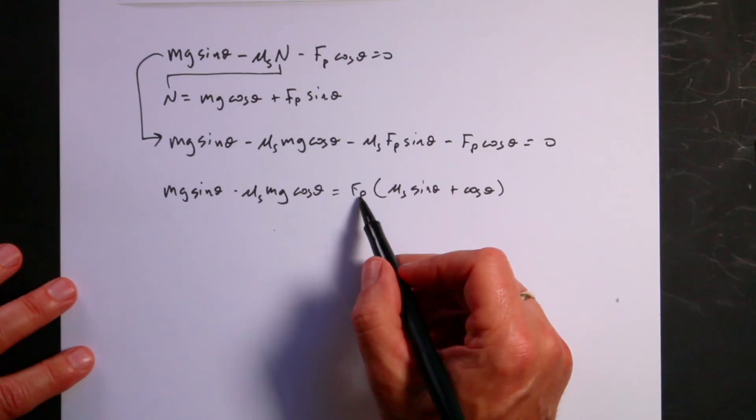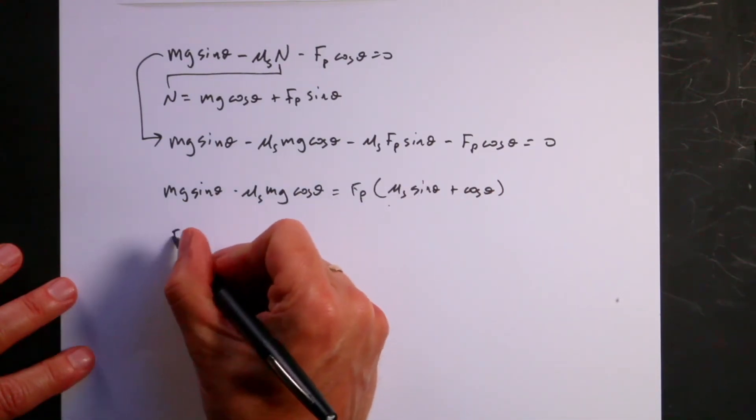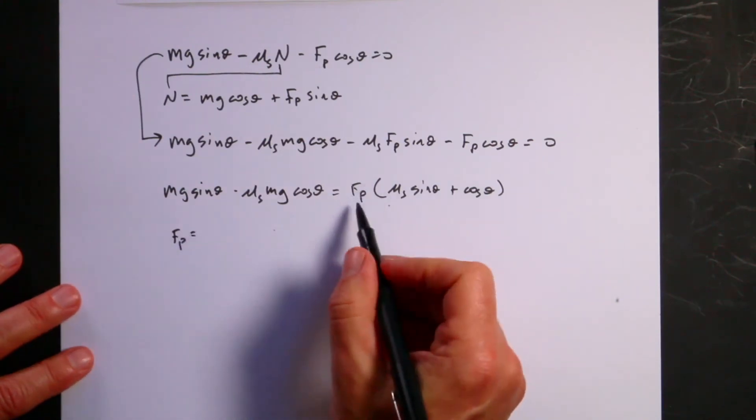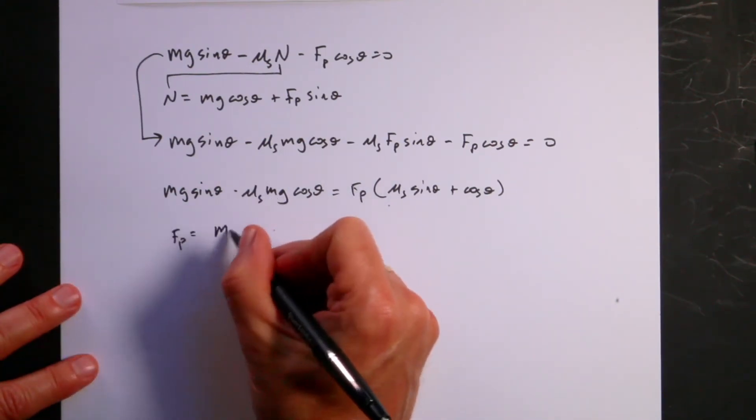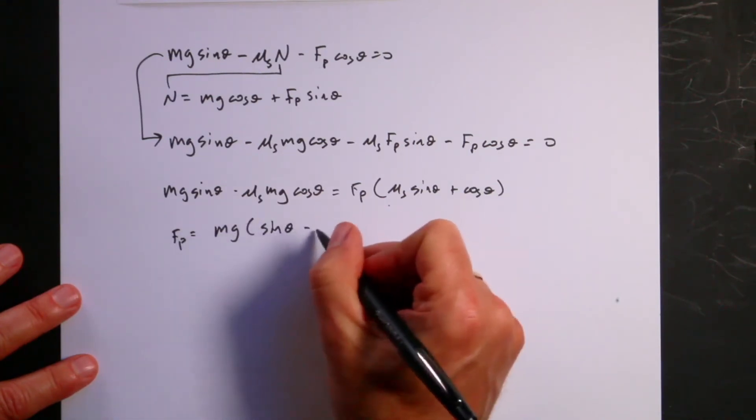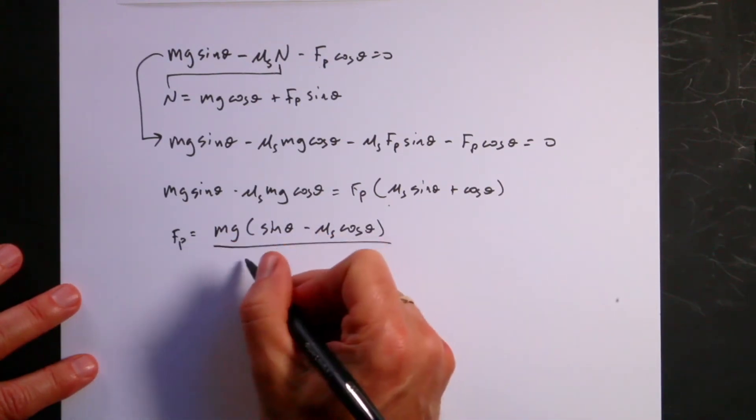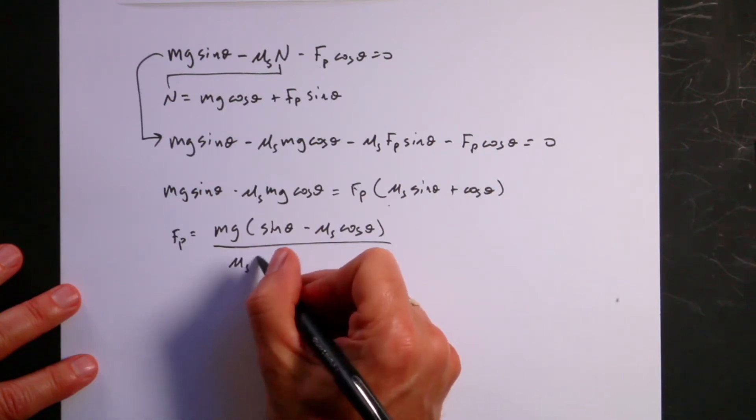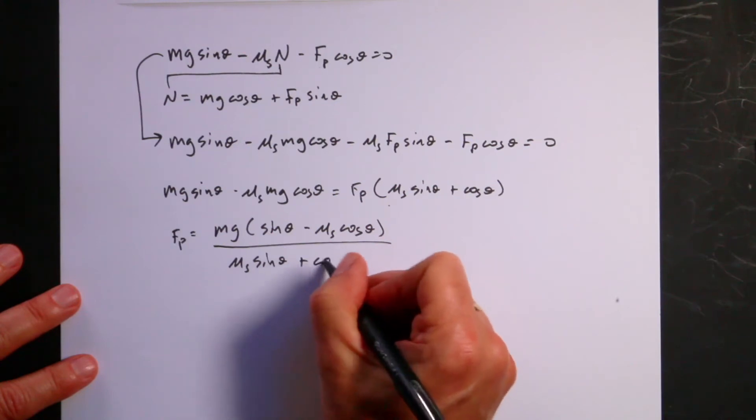Now I solve for Fp by dividing both sides by this, and I get Fp equals, this one I can factor out the mg, so I get mg times sine of theta minus mu s cosine theta, all of that divided by mu s sine theta plus cosine theta.